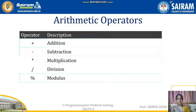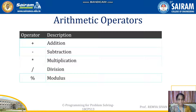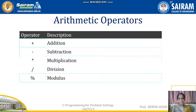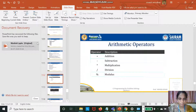First one is arithmetic operators. Plus, minus, star, division, modulus symbols — these are all known as operators. Plus symbol is used for addition, minus is used for subtraction, star is used for multiplication, division is for division, and percentage is for modulus. I will show the examples.